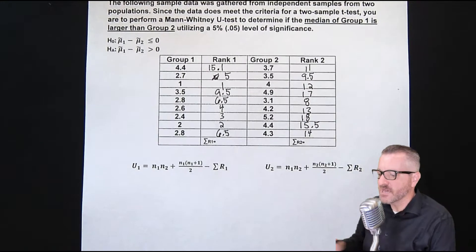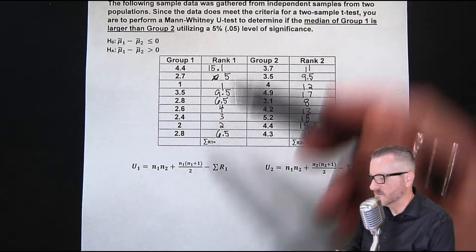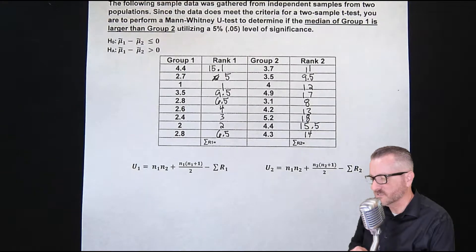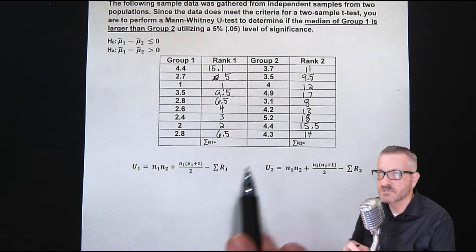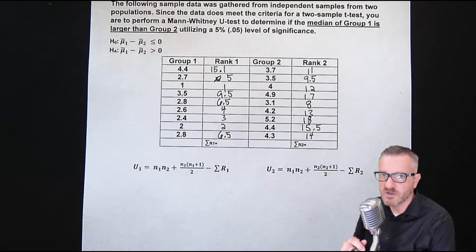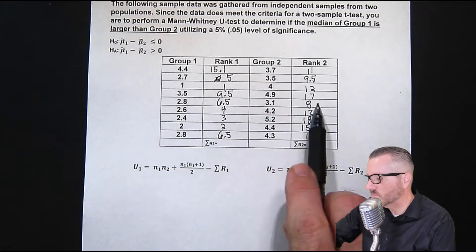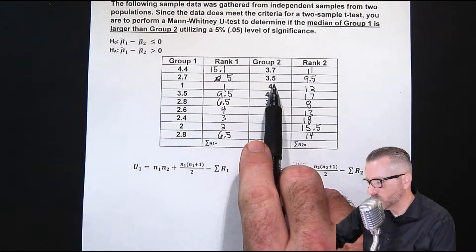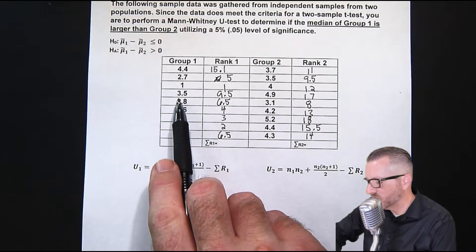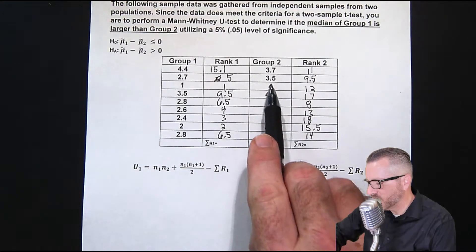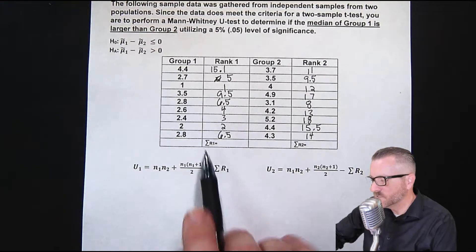So what we do, if we have ties, meaning the same value appears twice, then what we do is we take the rank before and the rank after, and we divide it by two. Now, if we have multiple ties, meaning, let's look at one of these. So 3.5 showed up at least two times. 3.5, 3.5.